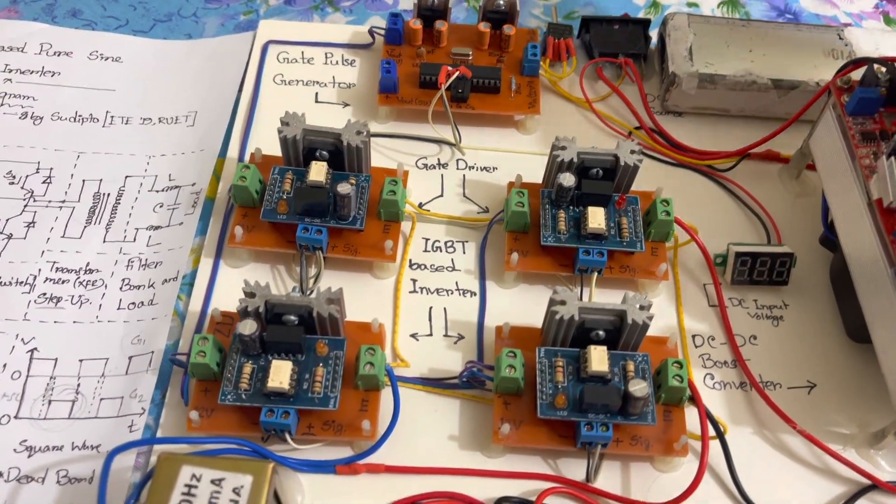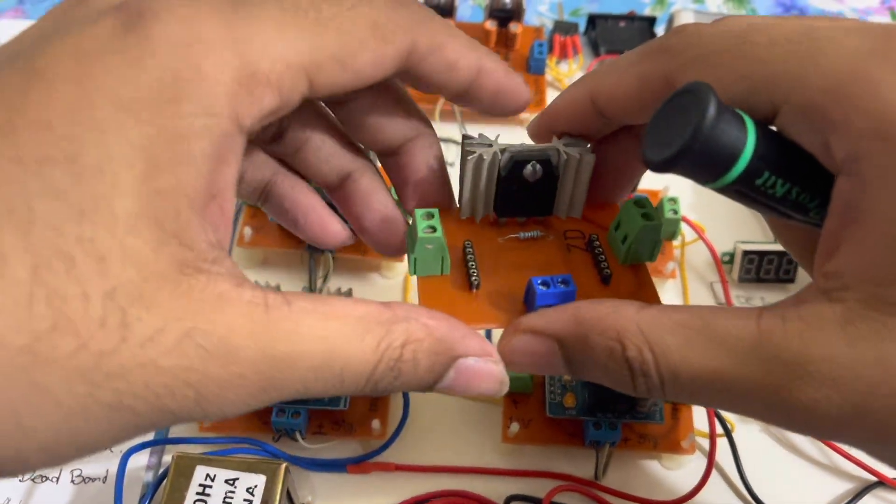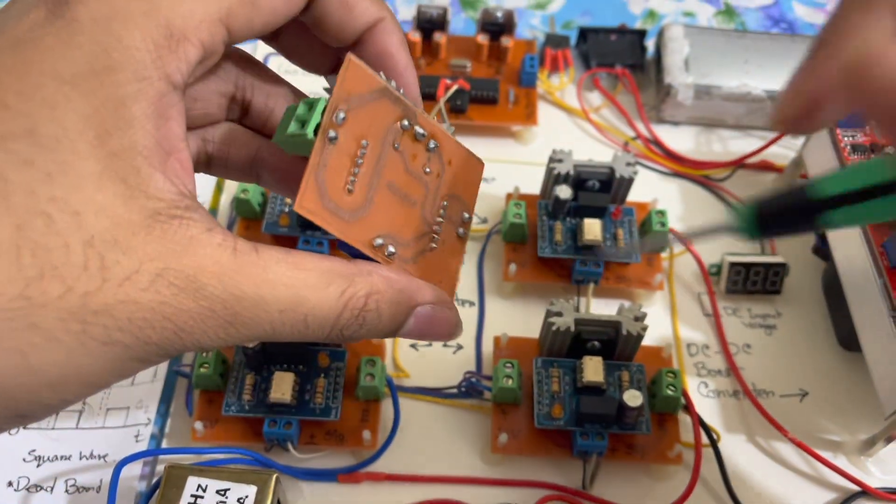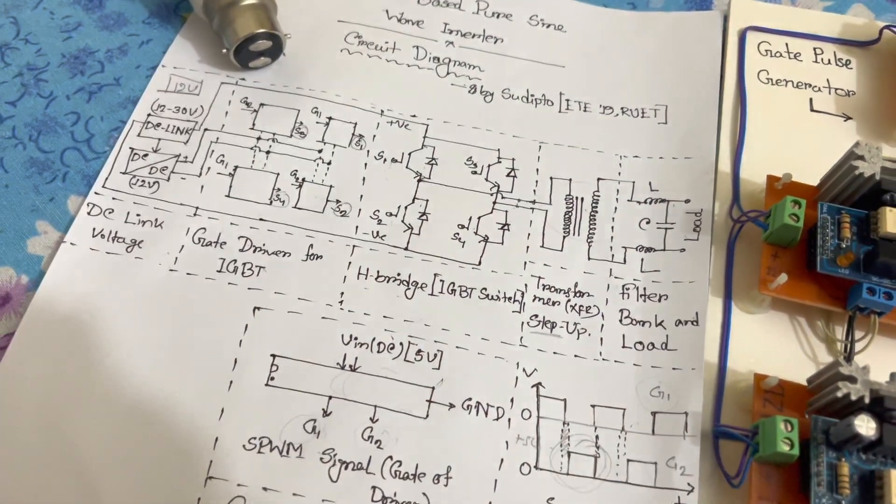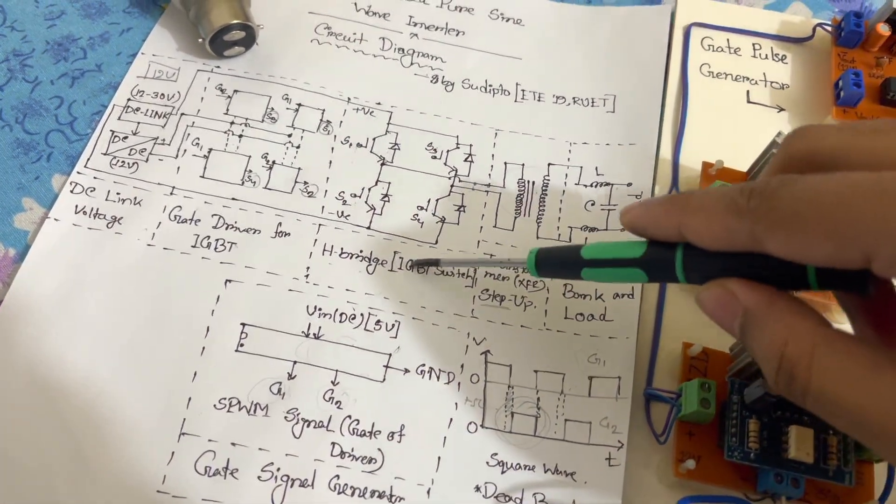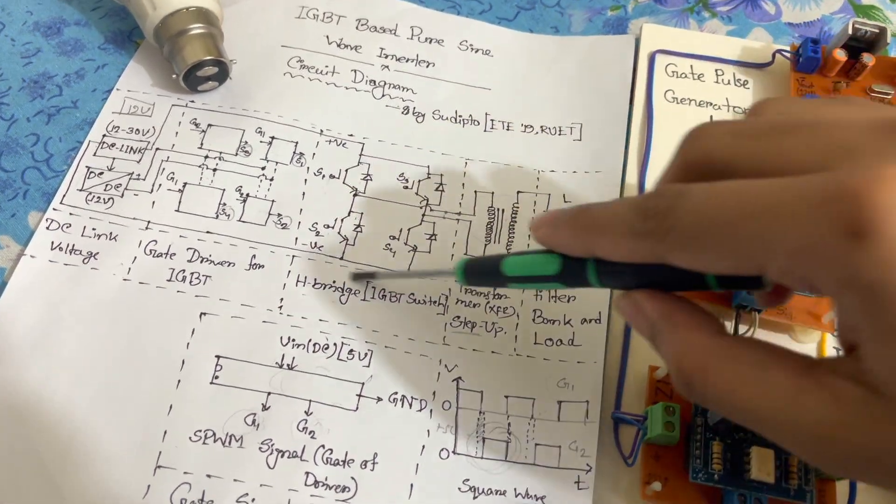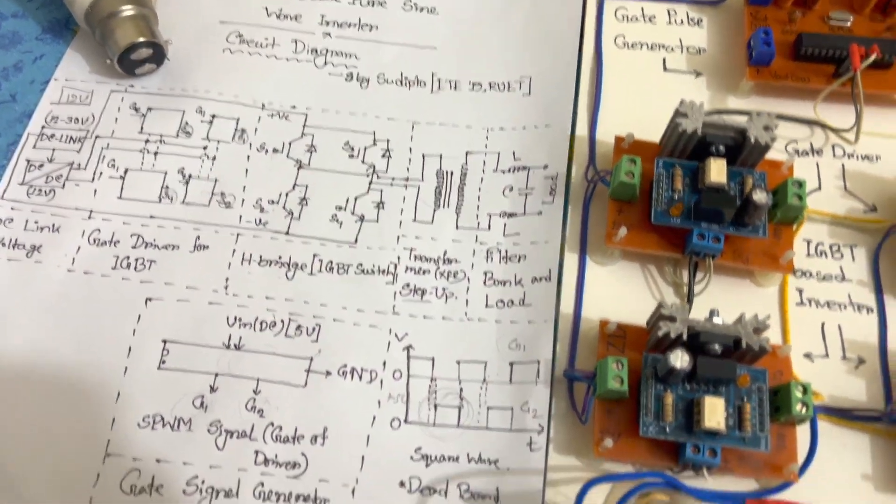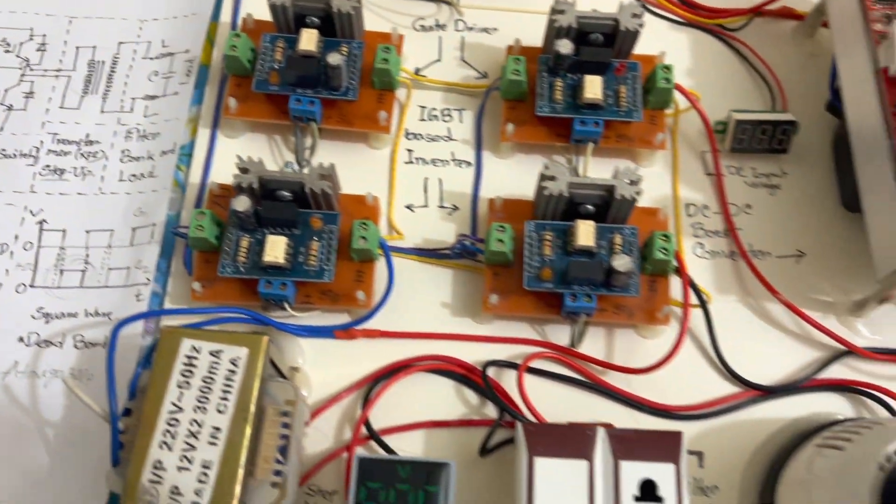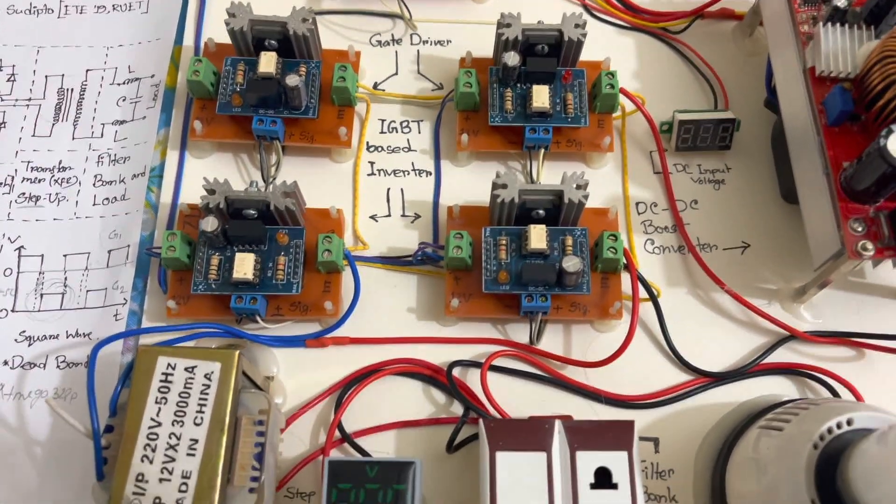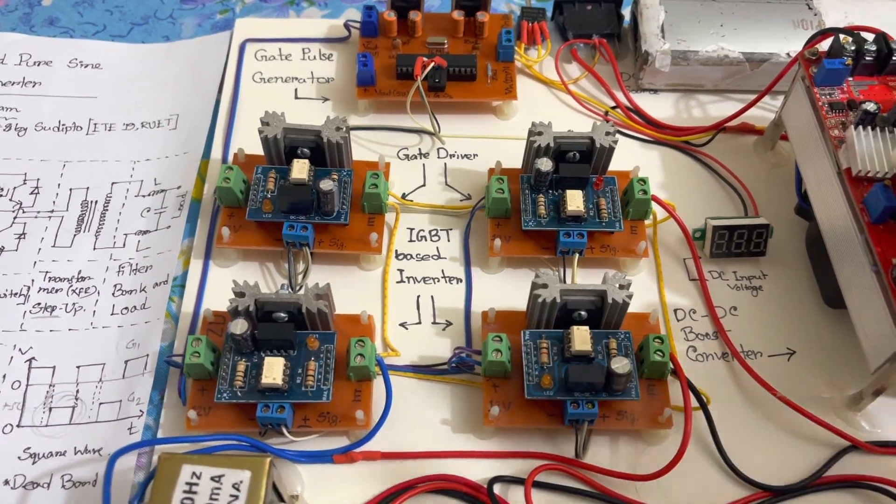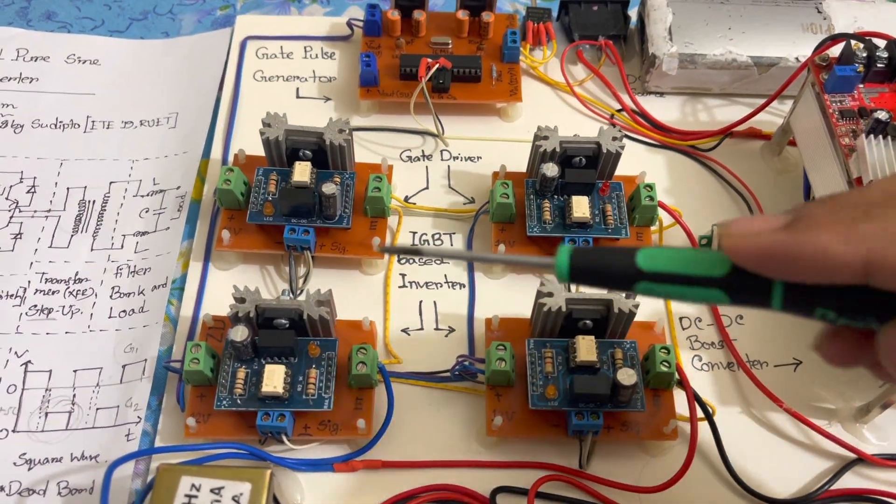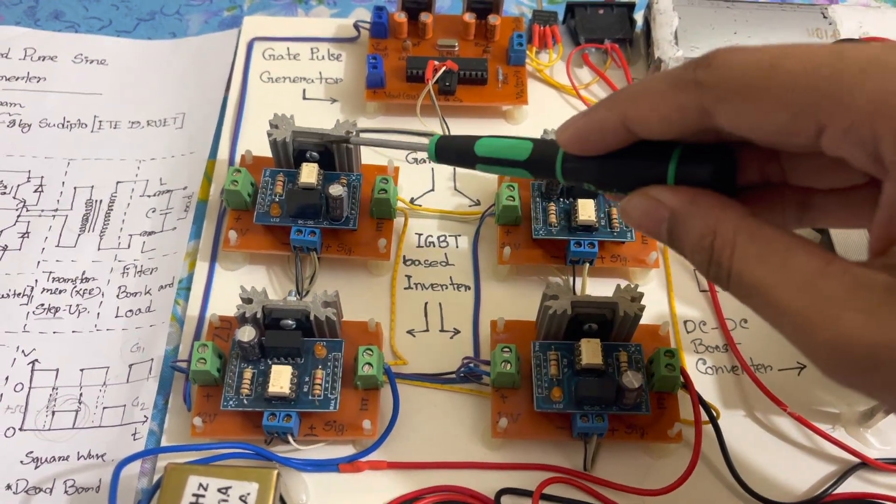In this H-bridge section you could see these four IGBTs are making the H-bridge section. Let me focus the camera more. Here you can see these four IGBTs are making the H-bridge.